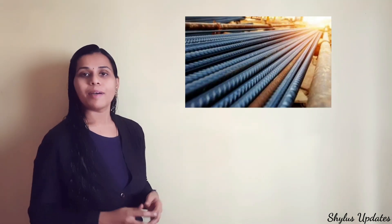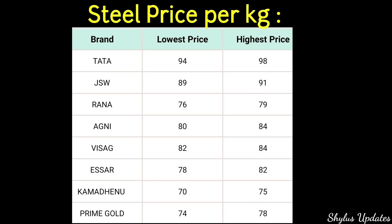Price list of steel per kg. Brand, lowest price, highest price. Tata Steel is from Rs.94 to Rs.98. JSW is from Rs.89 to Rs.91. Rana Steel is from Rs.76 to Rs.79. Agni Steel is from Rs.80 to Rs.84.